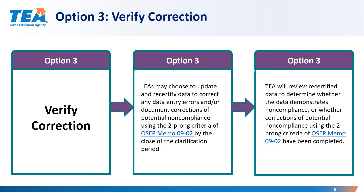LEAs may choose Option 3 to update any data entry errors and or submit documentation of corrections for potential noncompliance using the two-prong criteria of OSEP Memo 0902. LEAs must recertify and submit the data by the clarification period close date of August 31, 2021 to have data reviewed for demonstration of corrections. LEAs must maintain clarification documentation at the district level that may be subject to further review by the TEA. Specific directions for entering and submitting data during the clarification period can be found on TEA's State Performance Plan Indicators webpage.